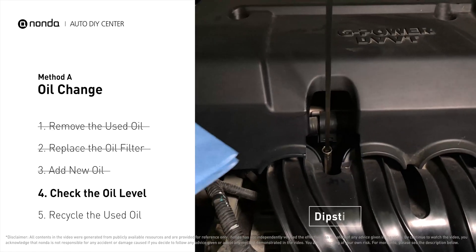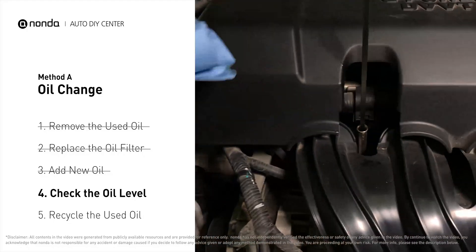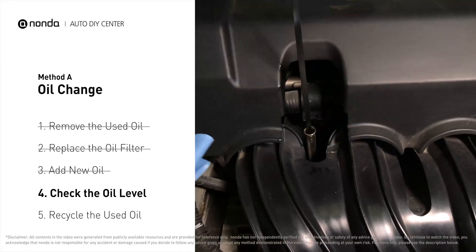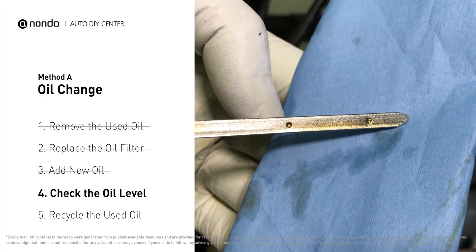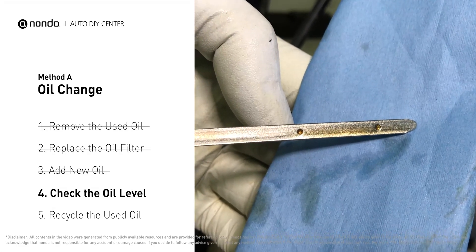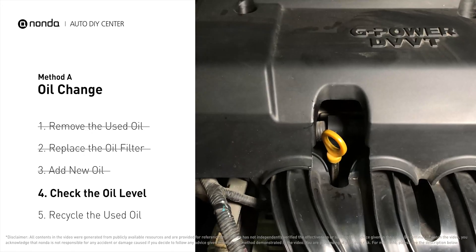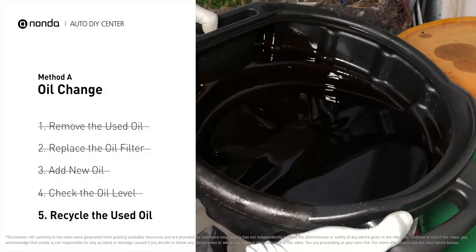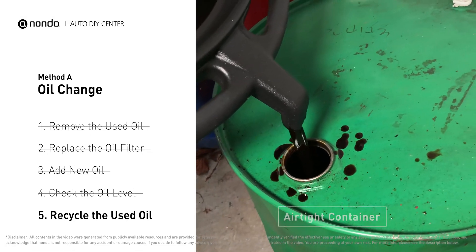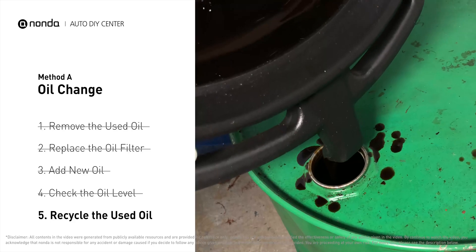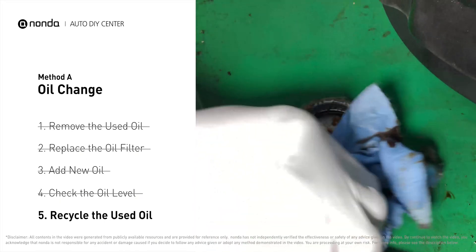To check oil levels, pull the dipstick out and clean it off. Replace the dipstick and pull it out again. The oil should be near the top dot or fill line. If it is close to the lower dot, you'll need to add more oil. If your oil levels are good, replace the dipstick and shut the hood. Place the used oil from your collection pan into an airtight container with a screw-on cap. Make sure the oil is cooled before transferring to the container. Used motor oil can be recycled at most auto stores or at recycling centers.